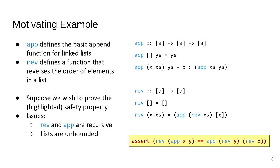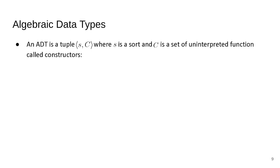Reversing the append of two lists is exactly the same as appending the reverses of those two lists except that we invert the order of parameters. There are issues because reverse and append are recursive and lists are unbounded. So we want to come up with an encoding using an algebraic data type.